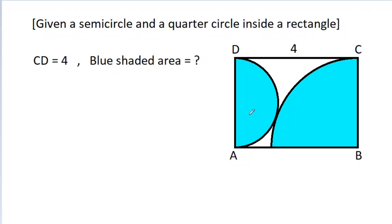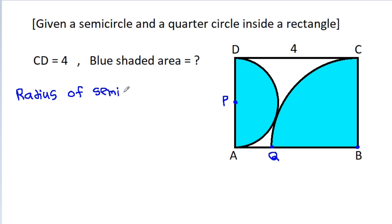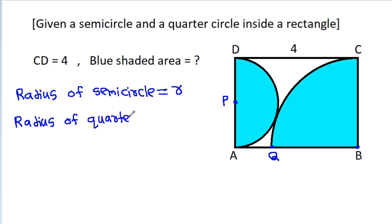In this video, we have been given a semicircle and a quarter circle inside a rectangle, and CD is 4. We have to find the blue shaded area. Suppose the center of the semicircle is P and the center of the quarter circle is B, and suppose this point is Q. The radius of the semicircle is equal to small r and the radius of the quarter circle is equal to capital R.